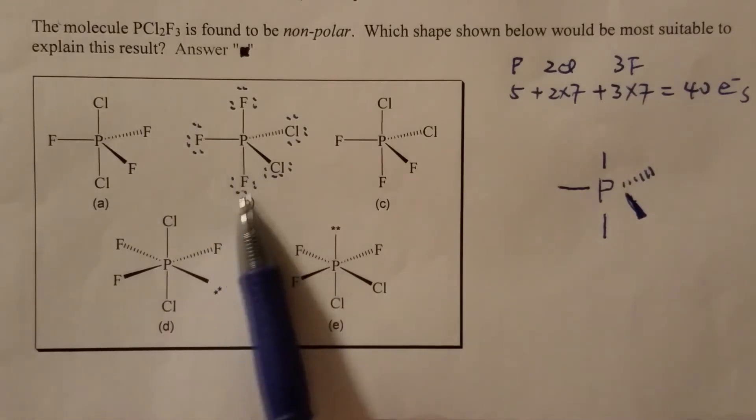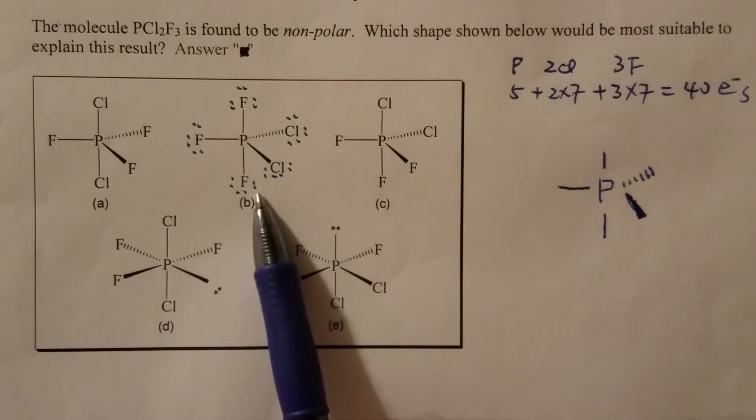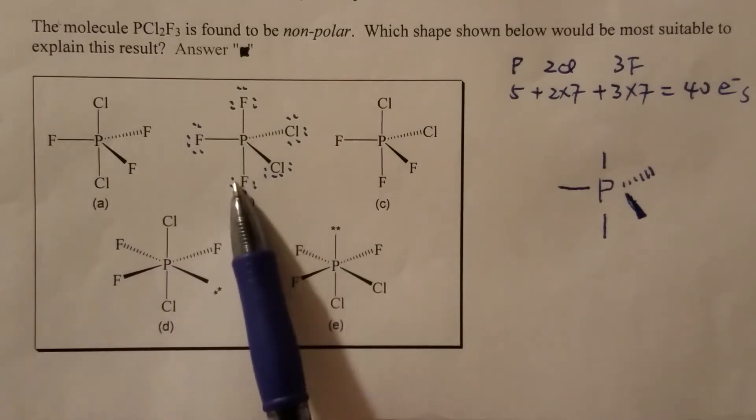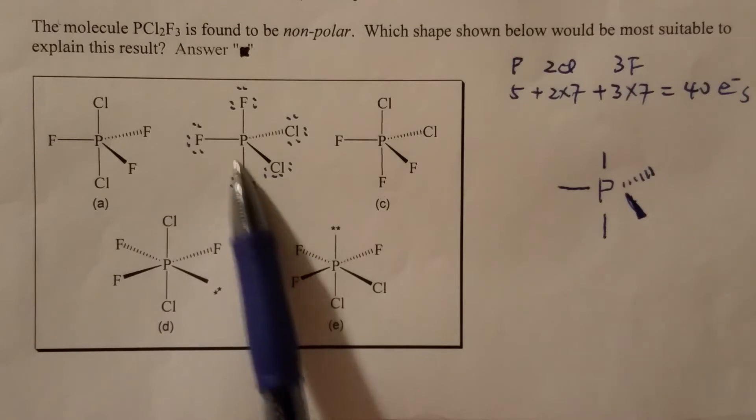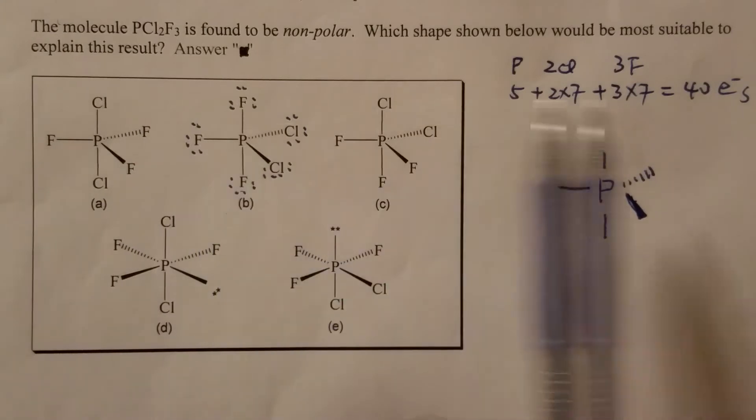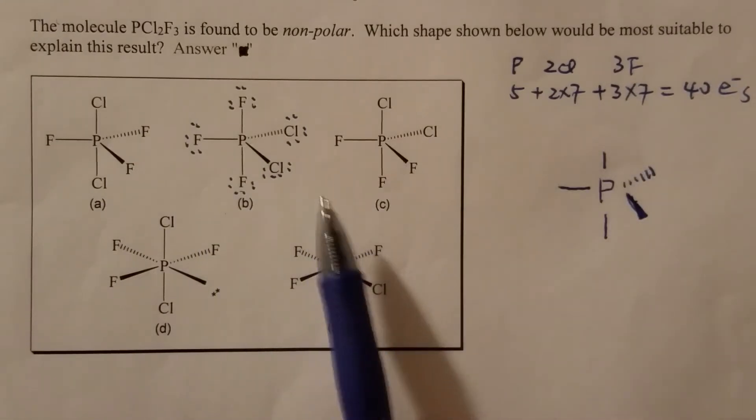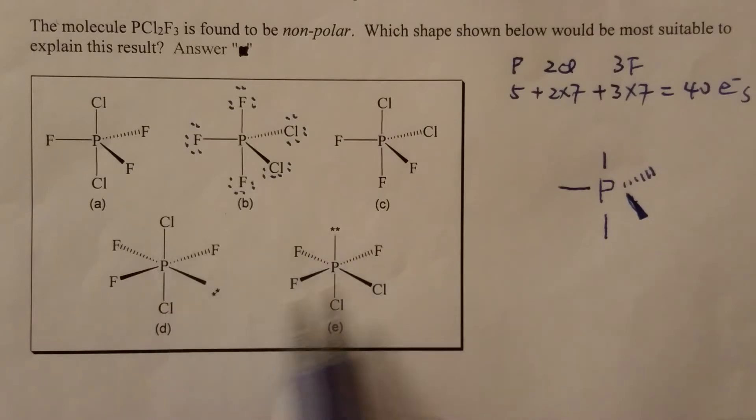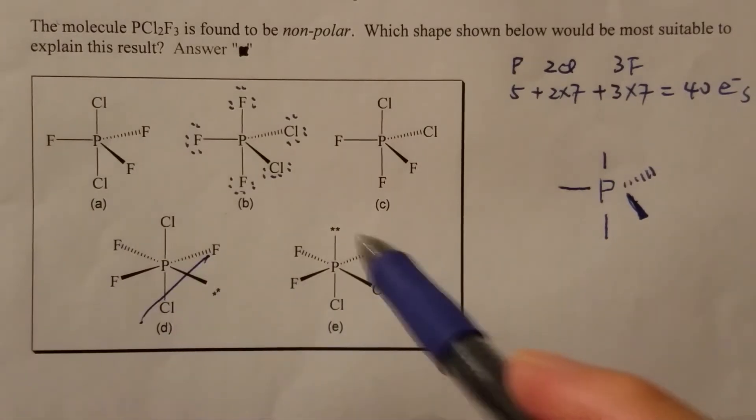And now you see, for each of the peripheral atoms, there are three lone pairs and one bonding pair. Therefore, there should be a total of 8 electrons. Eight times one, two, three, four, five, that's a total of 40. So therefore, there should be no lone pairs in the correct structure. This one is out, and this one is out.